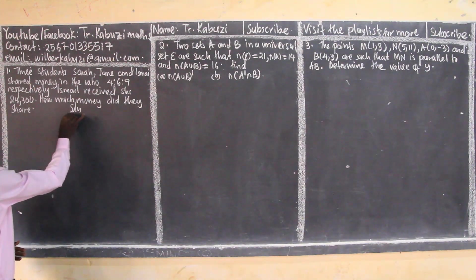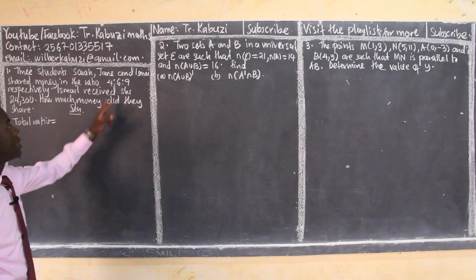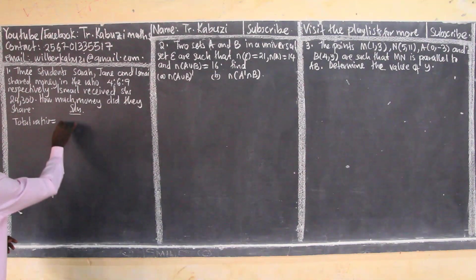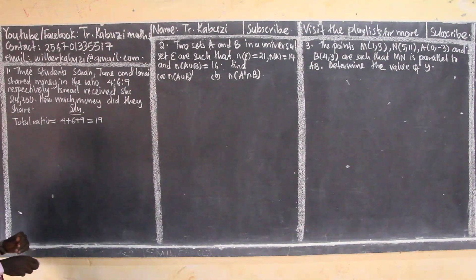To handle this number, we start by calculating what we call the total ratio. We get the total ratio by summing all the ratios there, which gives me 19.